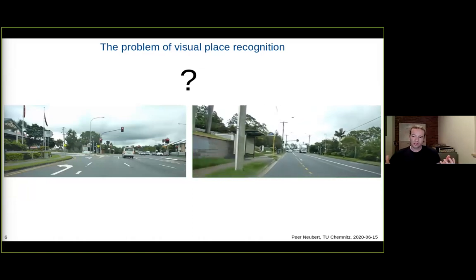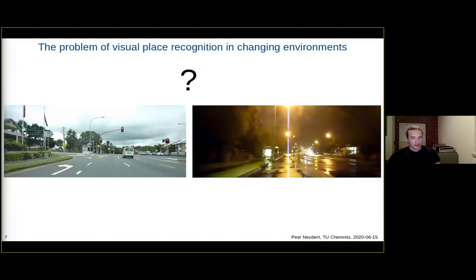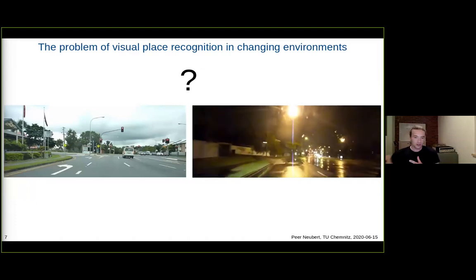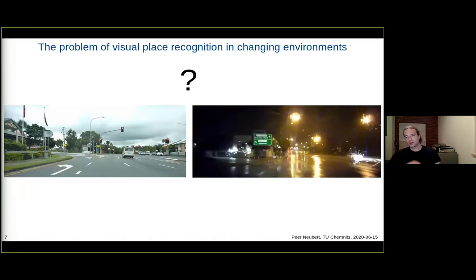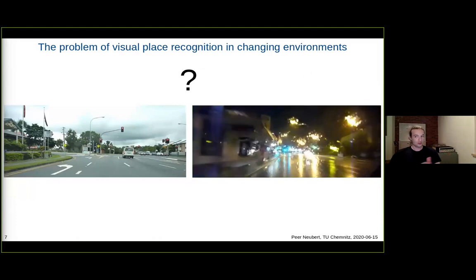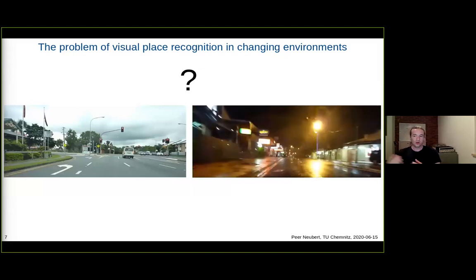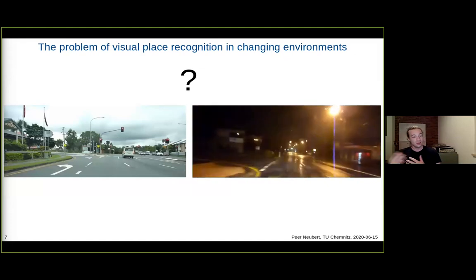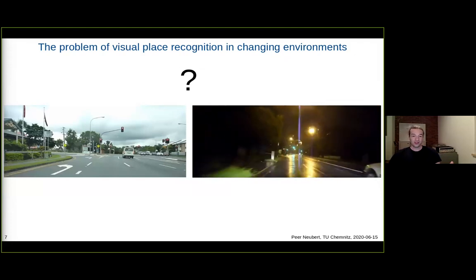This is a basic computer vision task and there are many algorithms to approach it, such as SIFT features to match places. However, it turns out that in the case of changing environments, those standard approaches do not work well. Changing environments means the weather, season, or lighting conditions differ dramatically between the database and query — for example, from a sunny summer day to localizing in a rainy winter night. This will be the example task for our application of VSAs.